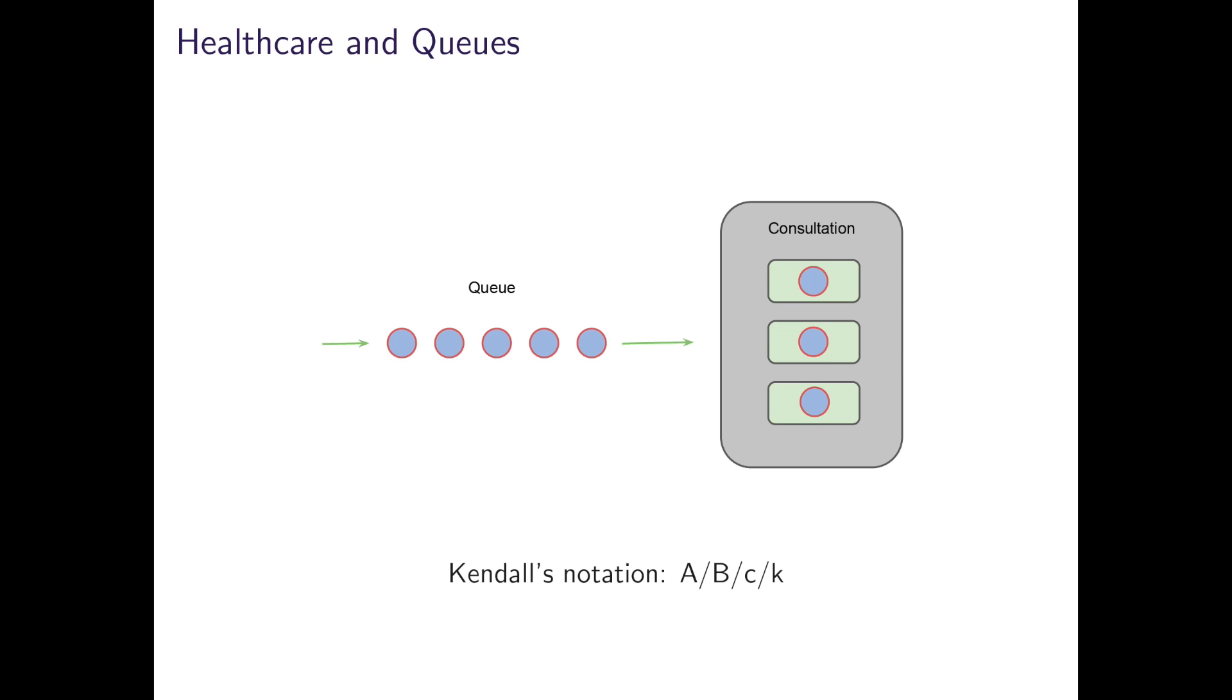So the letter D, for example, would mean deterministic, and that the time between successive arrivals into the system was known and fixed, for example, precisely every ten minutes. This would be a system without variability. But more commonly in healthcare systems, arrivals follow a Markovian process with exponentially distributed inter-arrival times.